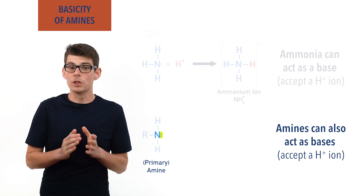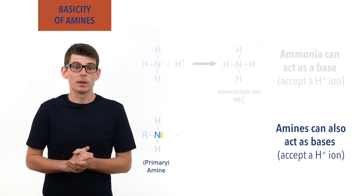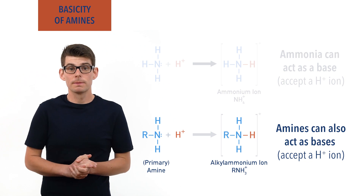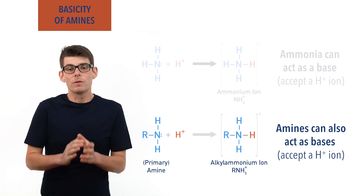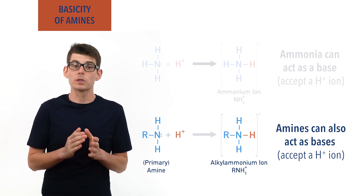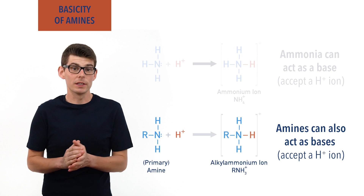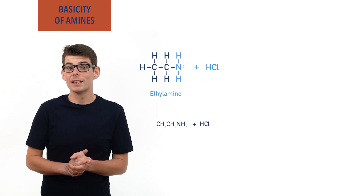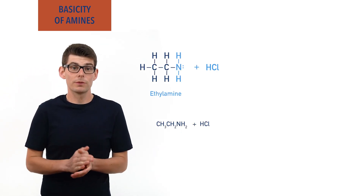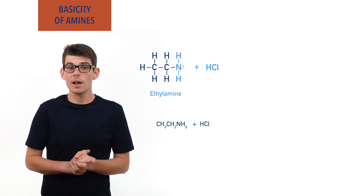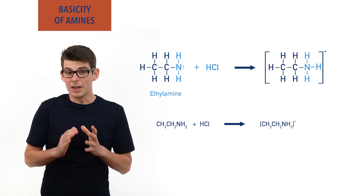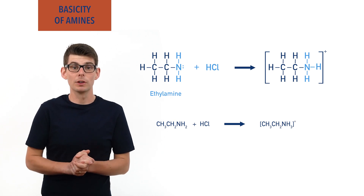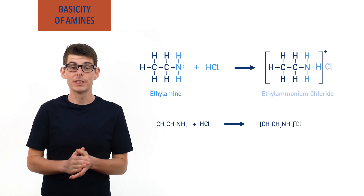When reacting with an acid, the nitrogen in an amine accepts a H+ ion and forms a positively charged ion, just like ammonia forming NH4+. The amine acts as a Bronsted-Lowry base. The positively charged ion produced will form a salt with the negatively charged ion left behind from the acid. For example, if hydrochloric acid reacts with ethylamine, the nitrogen in ethylamine will accept a H+ ion from the HCl and form the positively charged ethylammonium ion. The negatively charged chloride ion from the HCl will be attracted to this, and the salt ethylammonium chloride will be formed.